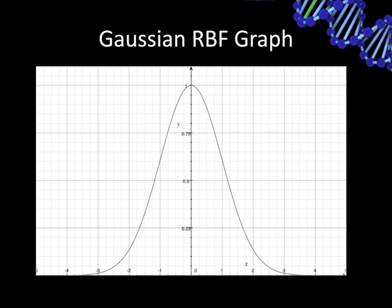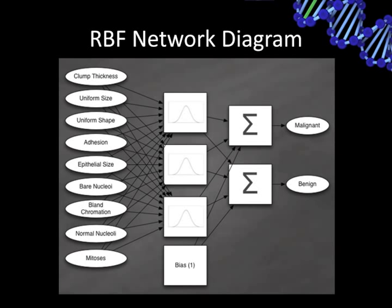Here is the graph of the Gaussian RBF — notice it looks like the normal distribution. Using several of these RBF functions, you can train the RBF network to approximate and fit models of fairly complex data. Here we see a graphical representation of the RBF network I evolved for this contest entry. You can see all inputs at the far left, three radial basis functions, and weights between the inputs and the RBFs. The outputs from the RBFs go to simple summations leading to two output neurons — one representing malignant, the other benign. Whichever has the highest output is the predicted class.